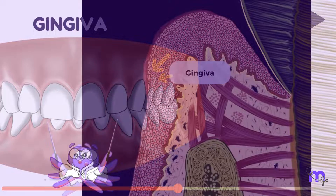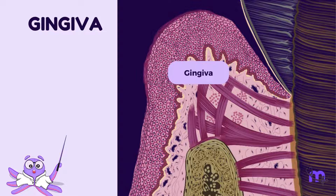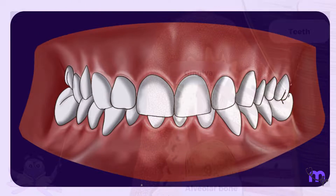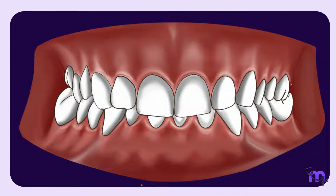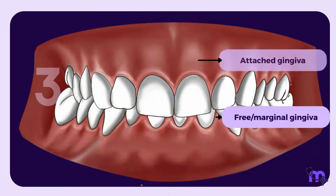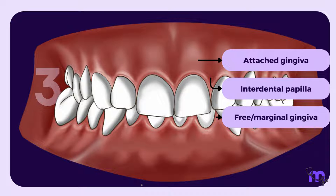The GENGIVA is the oral mucosal tissue that surrounds the teeth and covers the underlying ALVEOLAR BONE. Anatomically, GENGIVA can be divided into three parts: free or marginal GENGIVA, attached GENGIVA, and interdental papilla.